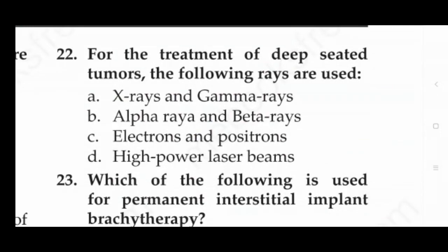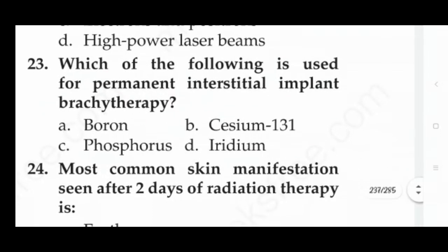Next question: for the treatment of deep-seated tumors, the following rays are used — option A: X-rays and gamma rays, option B: alpha rays and beta rays, option C: electrons and positrons, option D: high power laser beams. The answer is option A — X-rays and gamma rays.